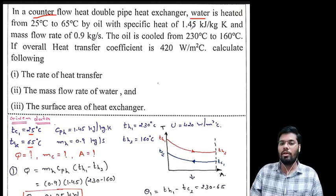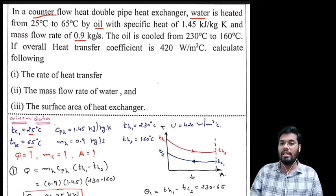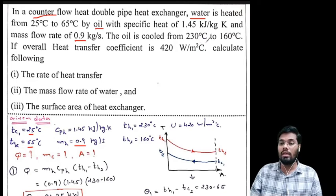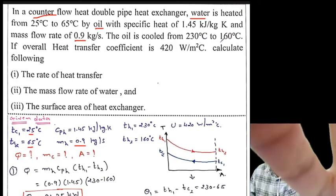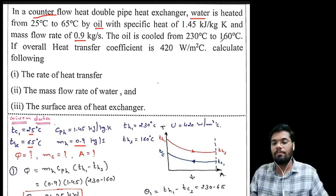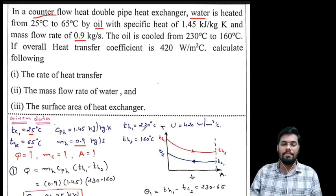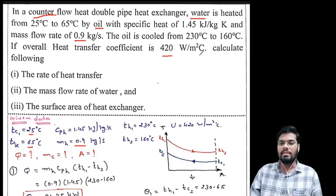The specific heat of oil (hot fluid) is CPH = 1.45 kJ/kg·K, and the mass flow rate of oil is MH = 0.9 kg/s. The overall heat transfer coefficient U = 420 W/m²·°C. We need to find three things: (1) the heat transfer rate Q, (2) the mass flow rate of water MC, and (3) the surface area A of the heat exchanger.